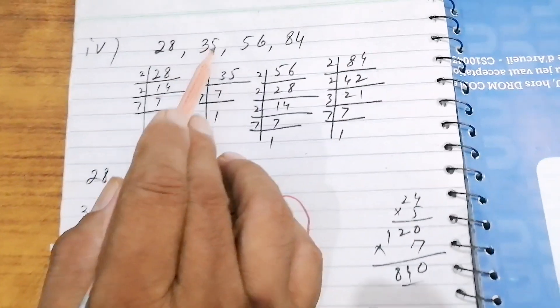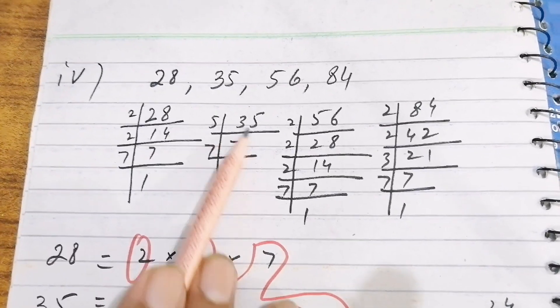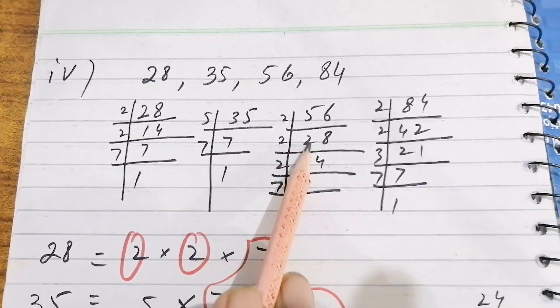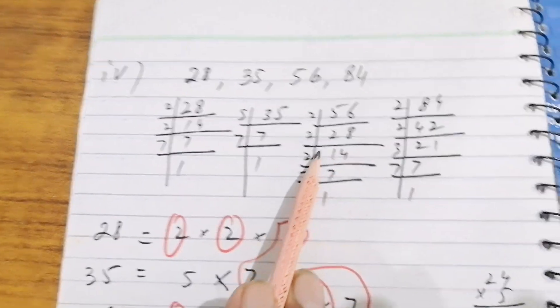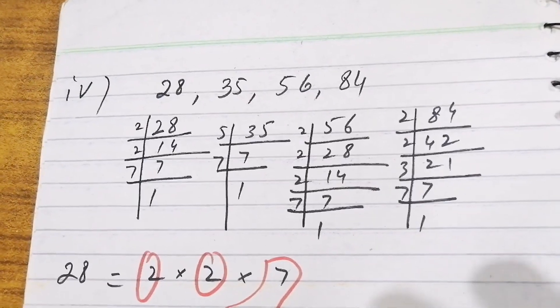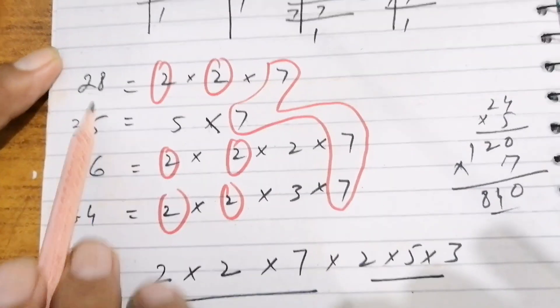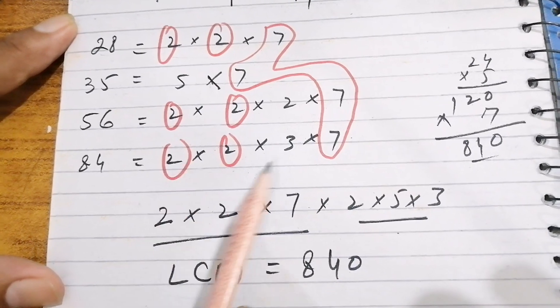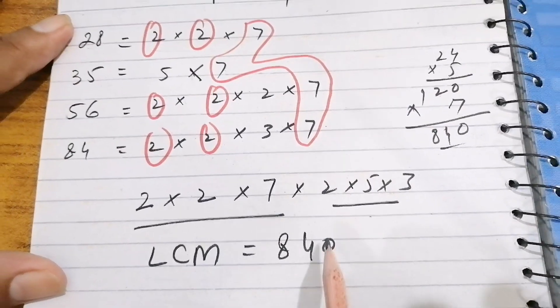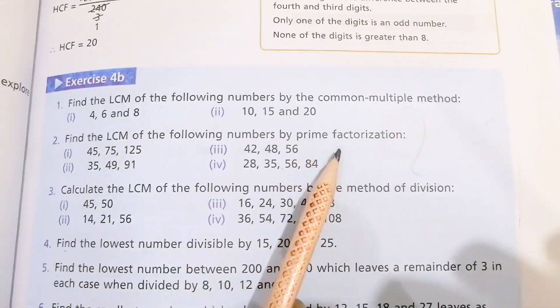The fourth part is 28, 35, 56, and 84. Prime factors: 28 = 2×2×7, 35 = 5×7, 56 = 2×2×2×7, 84 = 2×2×3×7. We write these prime factors in sequence, take common factors first and then non-common factors, multiply them all, and get the product 840.